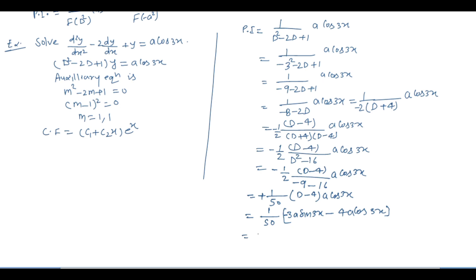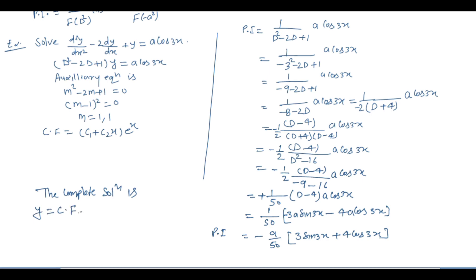तो PI = −a/50 · (3·sin(3x) + 4·cos(3x)). Complete solution: y = CF + PI = (c₁ + c₂x)eˣ − (a/50)(3·sin(3x) + 4·cos(3x)). उम्मीद करते हैं आपको यह topic समझ में आया हो। Please channel को like, subscribe और share कीजिए। Thank you.